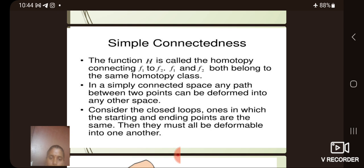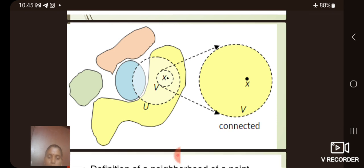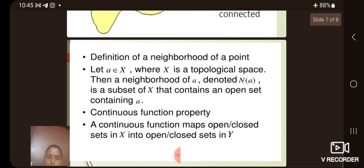f1 and f2 both belong to the same homotopy class in a simply connected space, and any path between two points can be deformed into any other. Consider the closed loops in which the starting and ending points are the same—they must be deformable into one another. This is the diagram for the connected path.